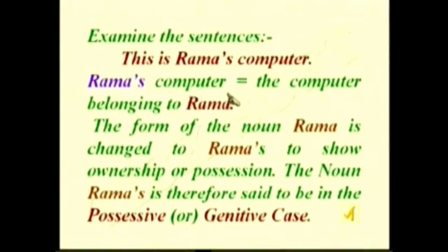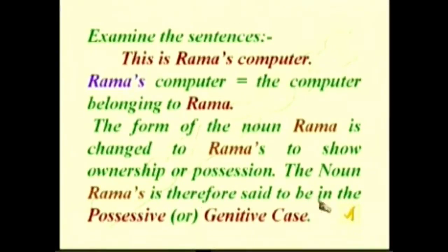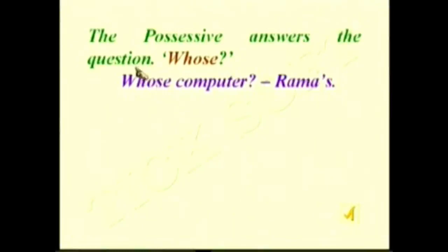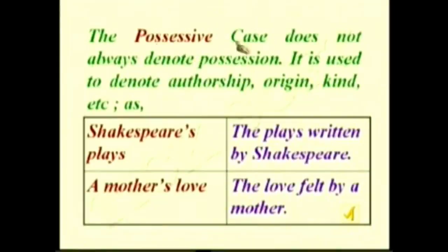Examine the sentence: 'This is Rama's computer.' Rama's computer is equal to the computer belonging to Rama — Rama is the owner of the computer. The form of the noun Rama is changed to Rama's to show ownership or possession. The noun Rama's is therefore said to be in the possessive or genitive case. The possessive answers the question 'whose?' — 'Whose computer? Rama's computer.' The possessive case does not always denote possession; it is used to denote authorship, origin, kind, etc.